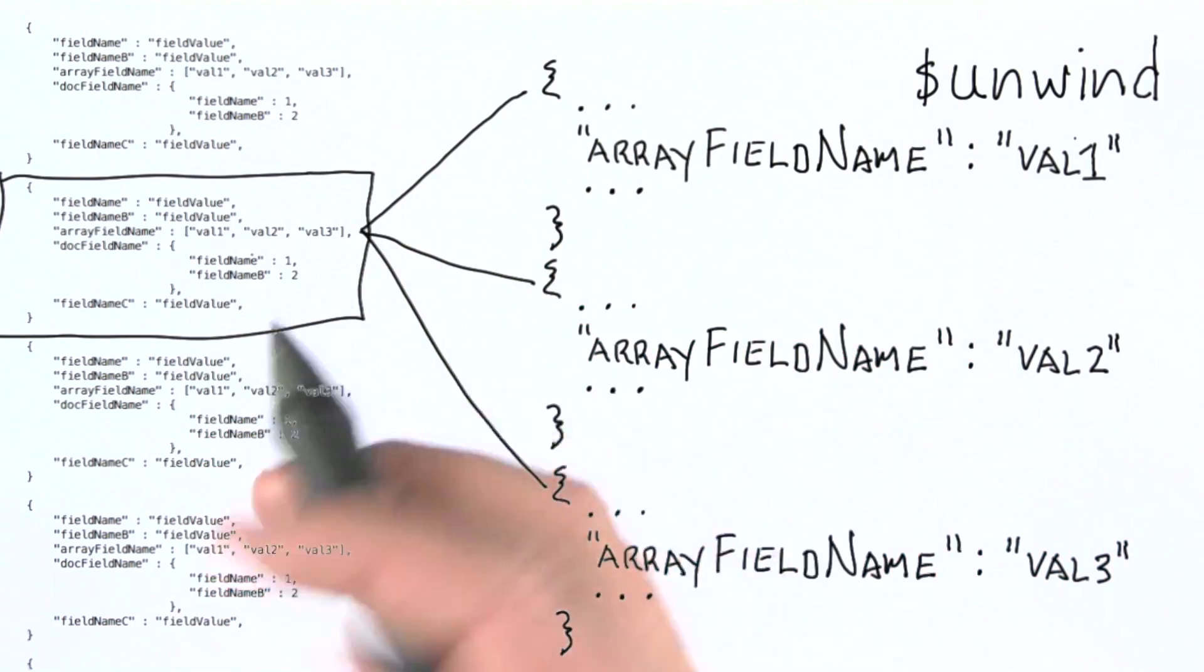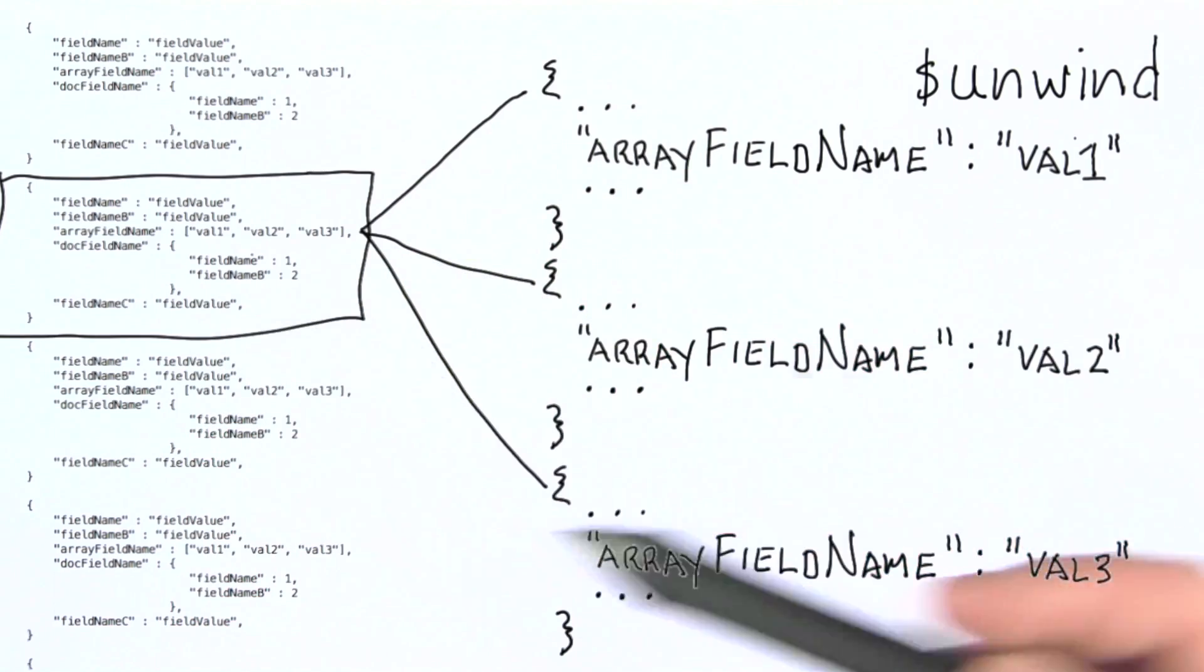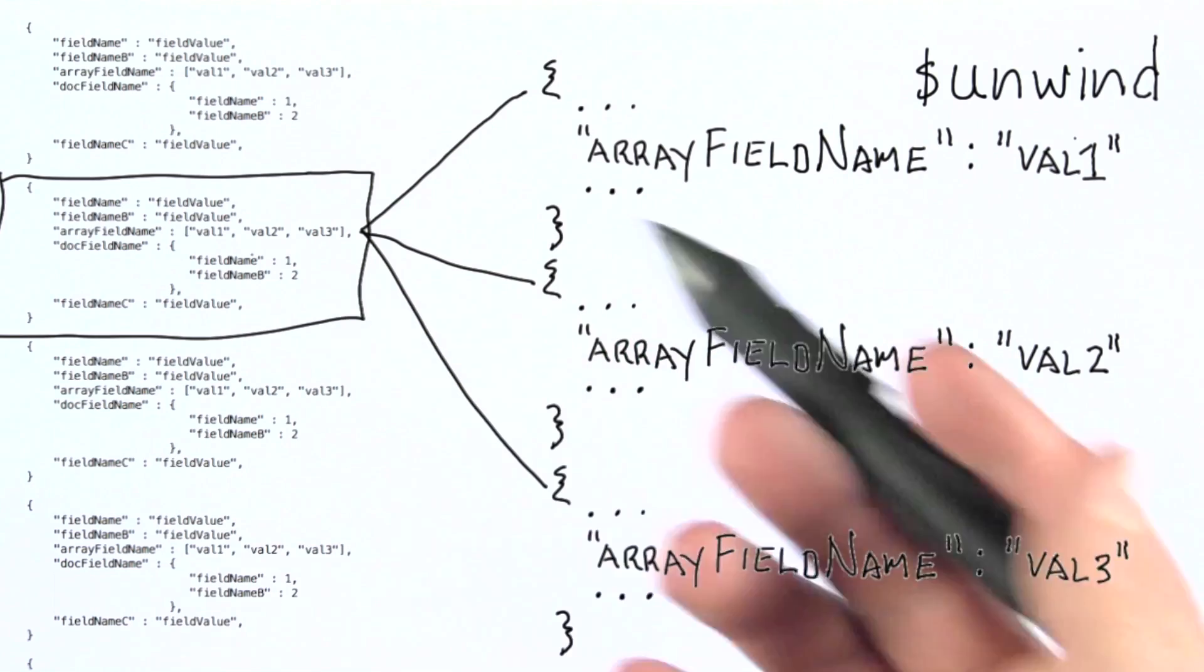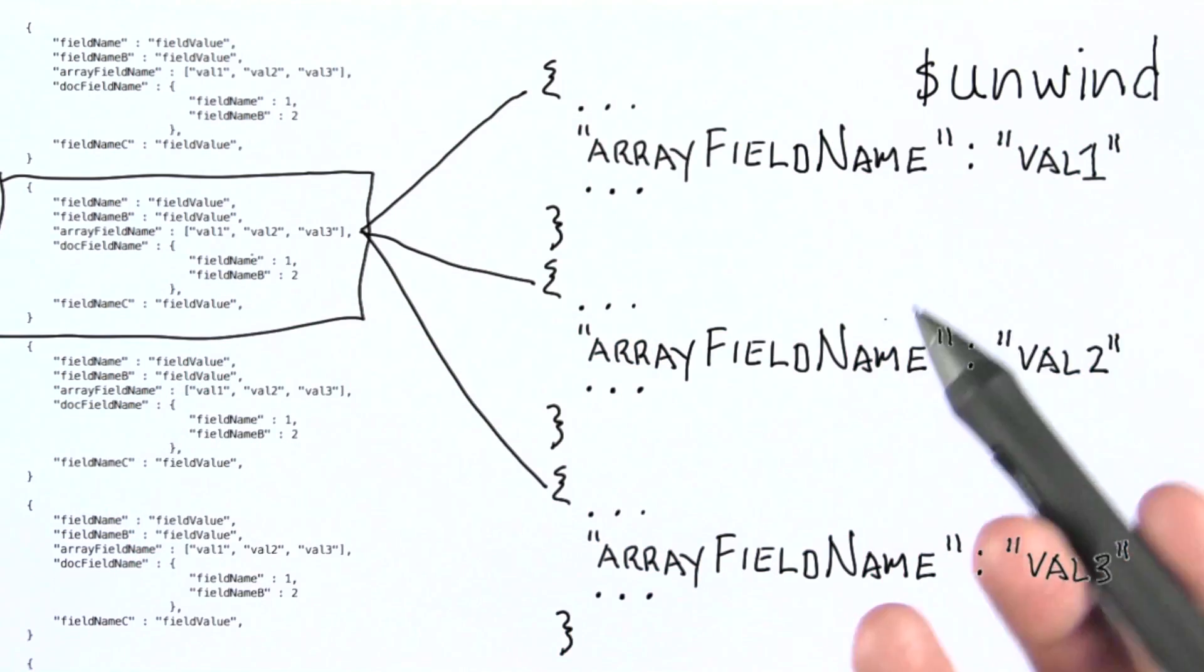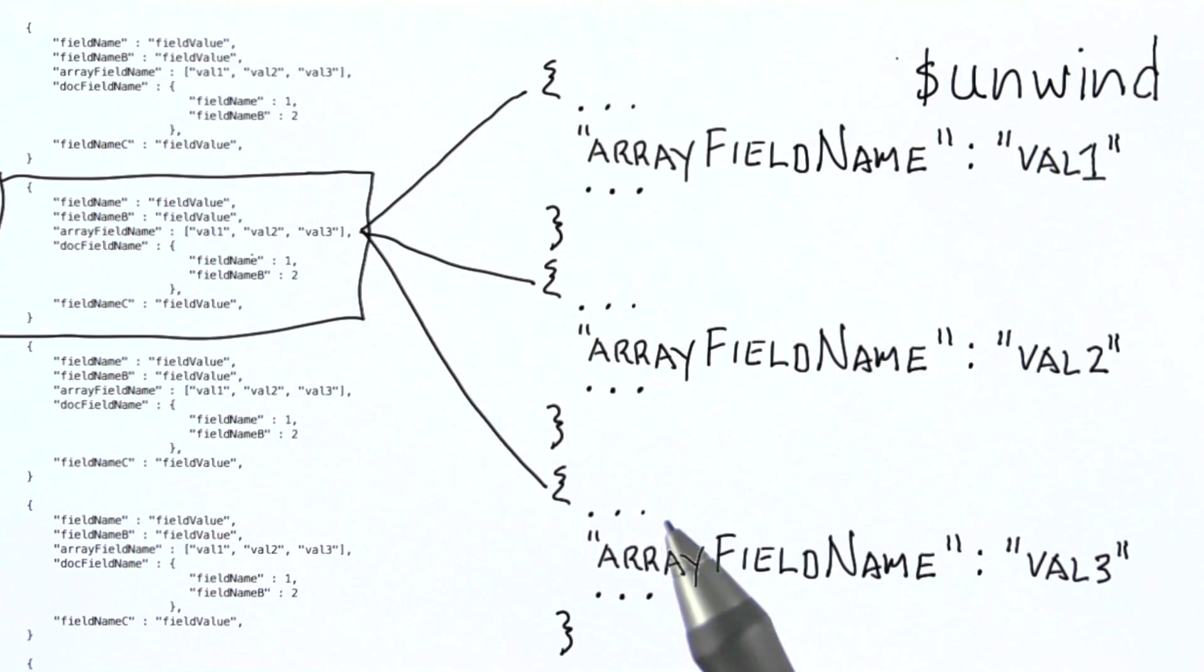Now where would we want to do this? Well, one example would be if we wanted to group based on the hashtags included in individual tweets. Hashtags in that data set are rolled up into an array. We could unwind them using unwind and do a group by in the next stage.